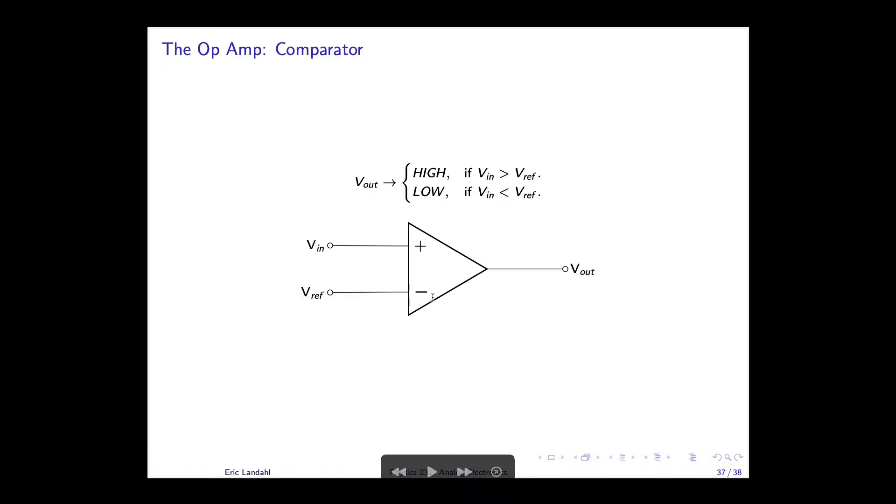So again, two volts in on the reference. If I bring in 1.9 volts, I will see this go low or go down towards zero volts. The moment, however, Vin exceeds the reference voltage, say set to two volts, I will see it go high. This is a one-bit example of an analog to digital converter and we'll be building ADCs later in the course.